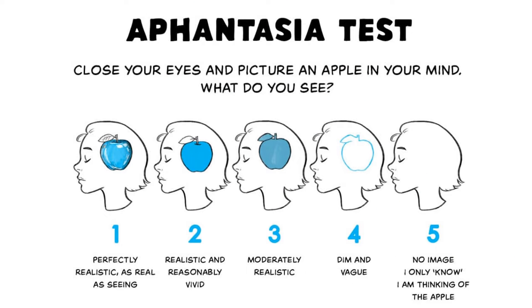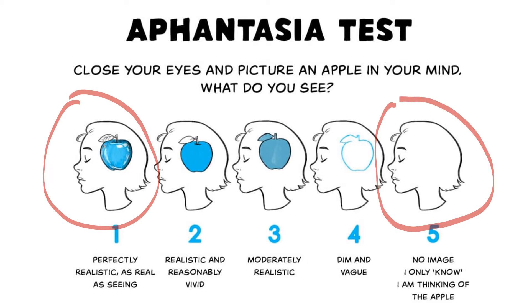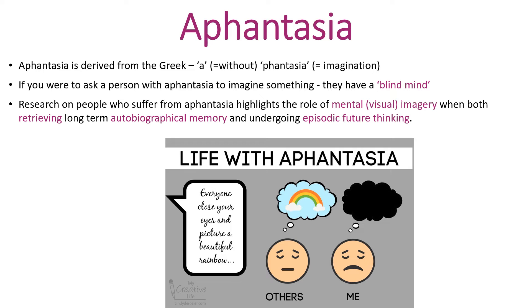A simple but common test for aphantasia is to ask an individual to close their eyes and visualise an apple. Most of us are at this end of the spectrum — we can easily visualise using our inner eye an apple. Somebody who experiences aphantasia is at the other end. They can imagine semantic aspects of the apple — how big it is, what colour it is, they'd say it's red — they just can't visualise it. So the origin of the word, 'a' meaning without and 'phantasia' meaning imagination, is oversimplifying aphantasia, because they can use imagination semantically; it's just they have difficulty with the visualisation aspect.